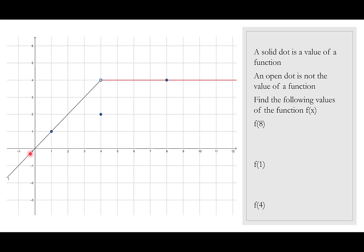Let's begin with f of 8. For f of 8 I go over to the x value of 8 and I look up. I can see that this value is 4 — I'm reading the y — so the x was 8 and the y was 4.